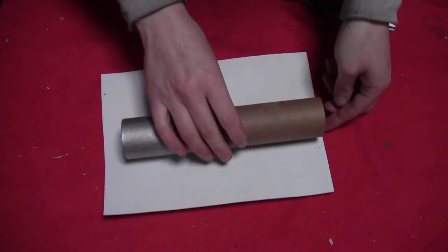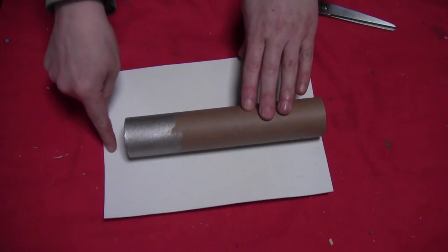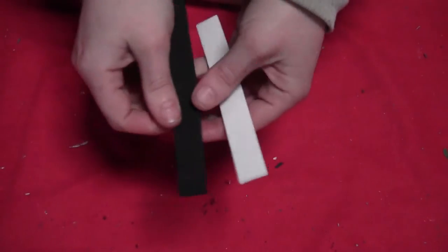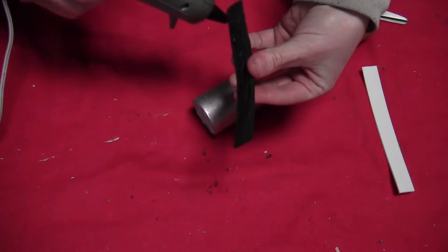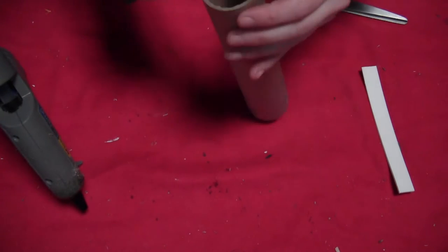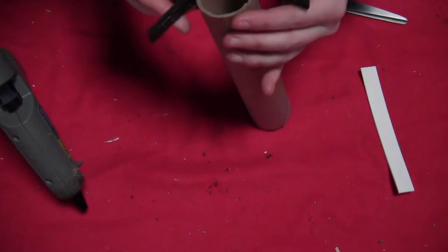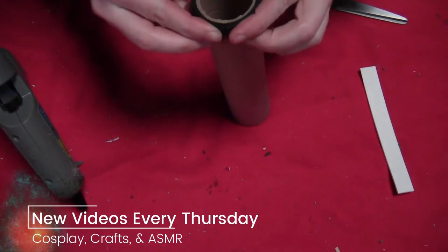Then take another piece of craft foam, and you want that to extend about an inch beyond the silver side. Then cut two strips of craft foam. I'm just using two or three millimeter craft foam here.